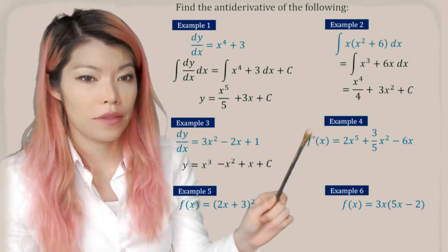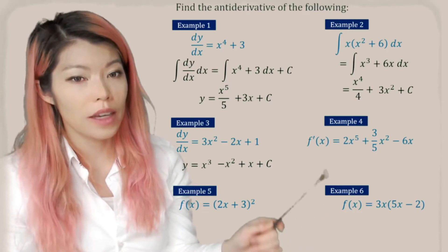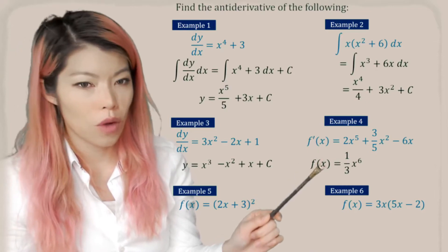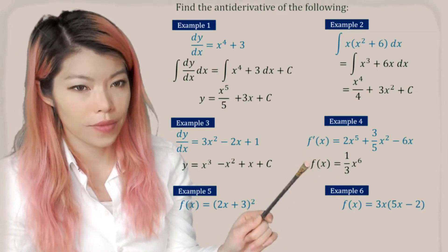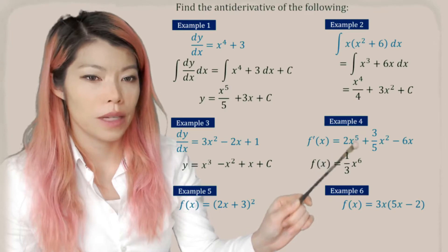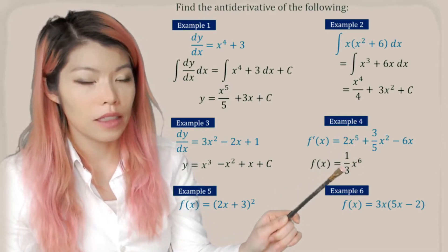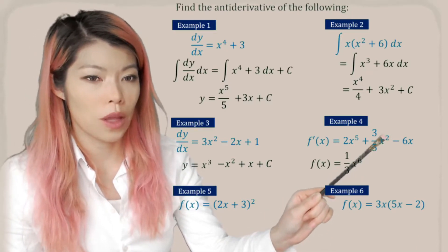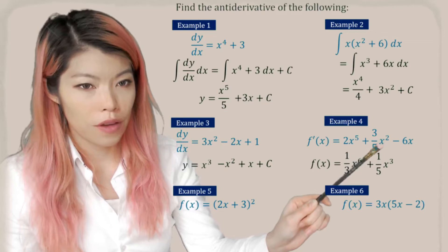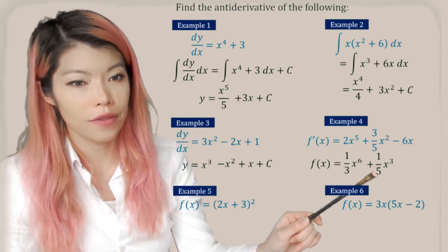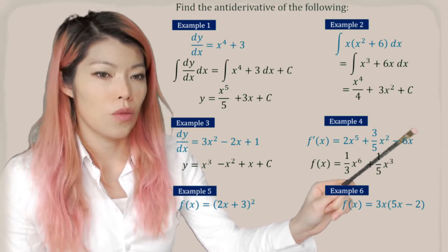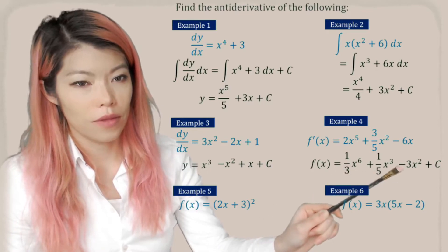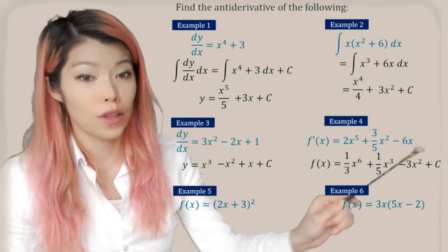Here we have the derivative f'(x), so the anti-derivative would be f(x). You ask yourself: when you derive you get that, so what was the thing that you derived? x to the 5, add 1 becomes x to the 6; 2 divided by 6 becomes one third. x to the 2 add 1 becomes x to the power of 3; three-fifths divided by 3 becomes 1 over 5. And then x, 1 plus 1 becomes x squared; 6 divided by 2 is 3, so we have minus 3 because there's a minus there. Don't forget the plus c.